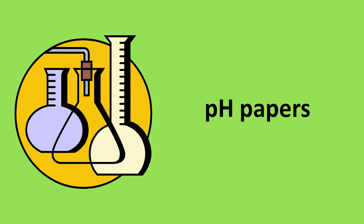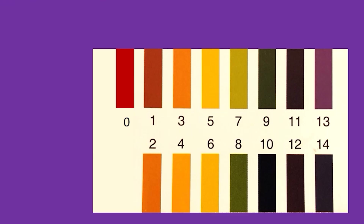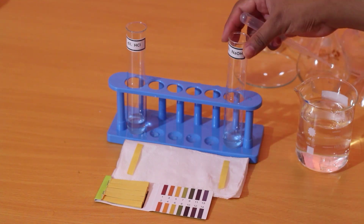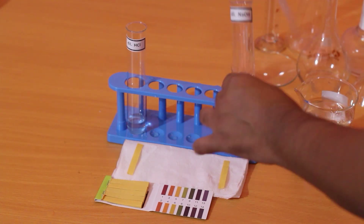Let's see how we can differentiate an acidic solution and a basic solution by using the pH paper. pH value ranges from 0 to 14. 0 is for strong acids, 14 is for strong bases, and 7 is for neutral solutions. Colors like red, orange, and yellow suggest an acidic pH. The exact pH of the solution can be assessed by matching the color of the pH paper with the reference book.